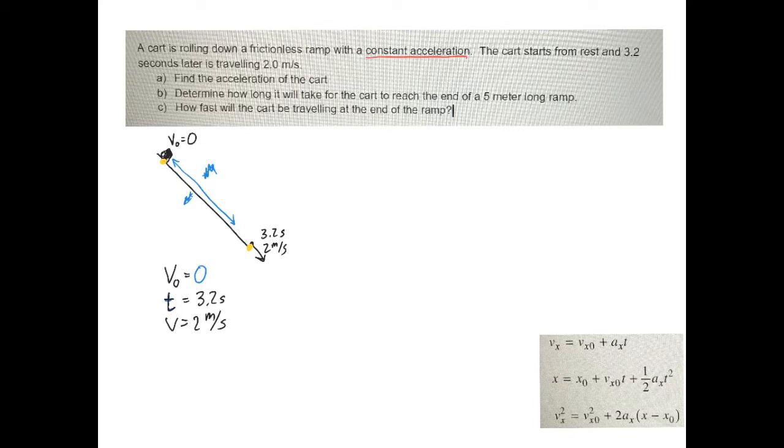So my final velocity is 2 meters per second. Now, is there anything else that I have? Remember, I have position, initial position and acceleration. I don't know what the acceleration is. It would sure be nice if I had something else, though. I do know, let's see, in part A, it asked me to find the acceleration of the cart. So I do know I'm looking for A.